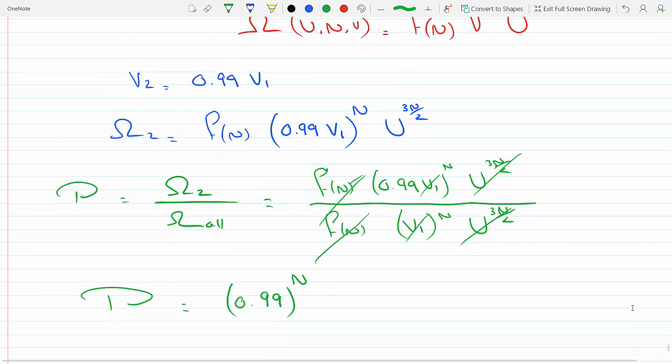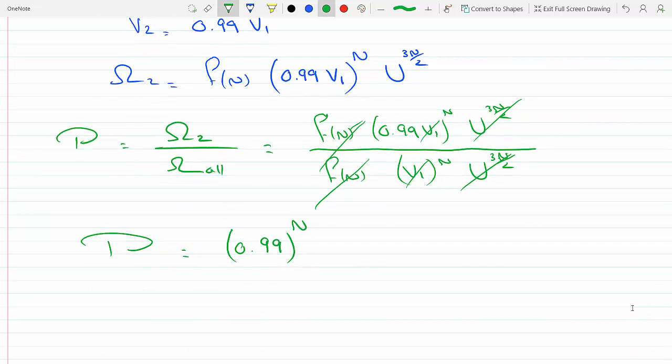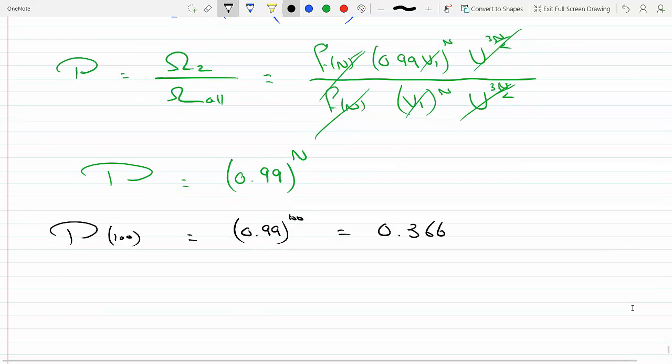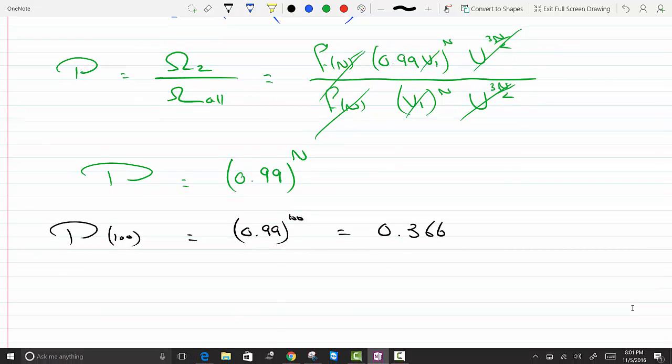Now in the first case, if N is 100, the probability of 100 - I just replace N by 100. And let's plug this in. You get 0.366.